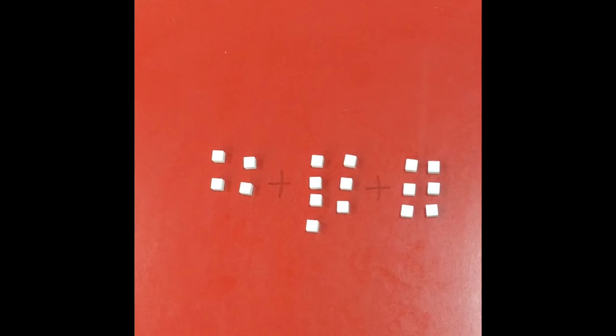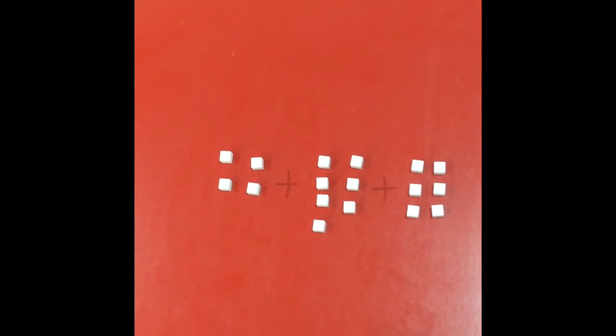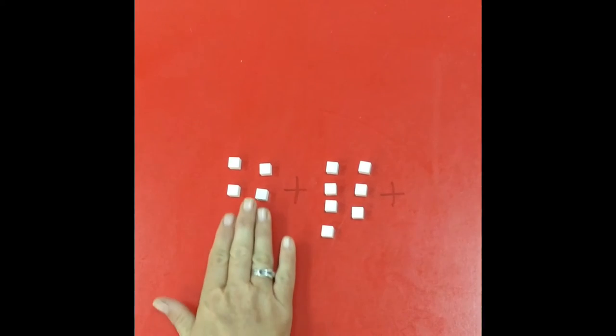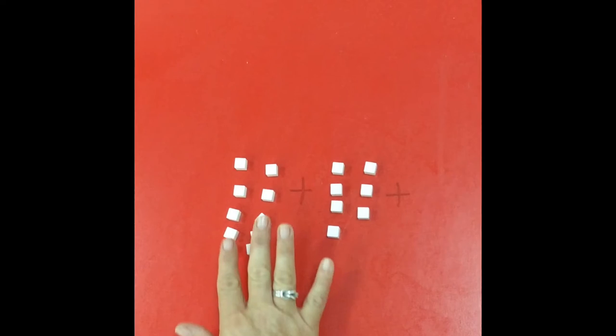They will begin to recognize that they can use their number bonds to help them solve even the harder mathematics. For example, they've learned their number bonds to ten in year one and they should be secure, so they would recognize that four add six actually makes the ten.